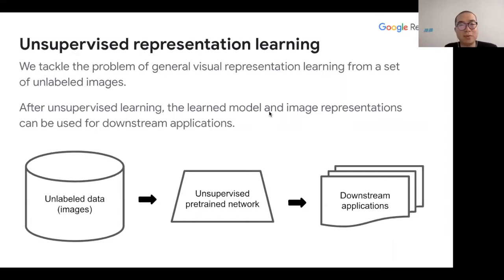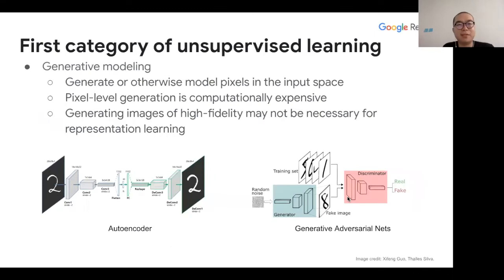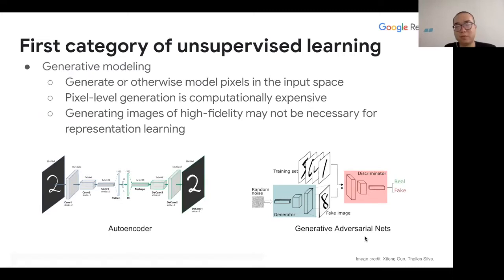Many of you might know that unsupervised representation learning is an important area where typically what people do is they have a lot of unlabeled data and want to train some network without any supervision or labels. For different downstream applications, you can either fine-tune or use other ways of using the features to speed up the performance of the downstream applications. In computer vision, there are two main categories of unsupervised learning methods. The first is based on generative models — autoencoders and GANs for representation learning.